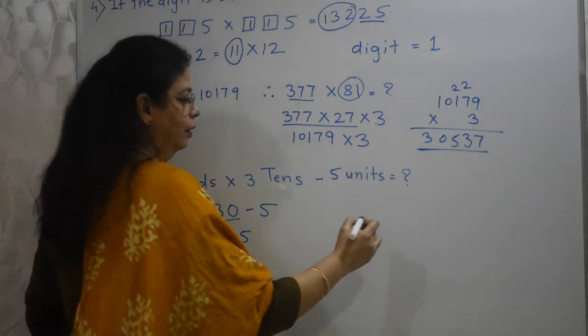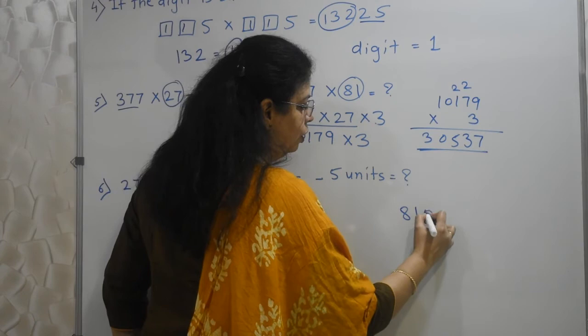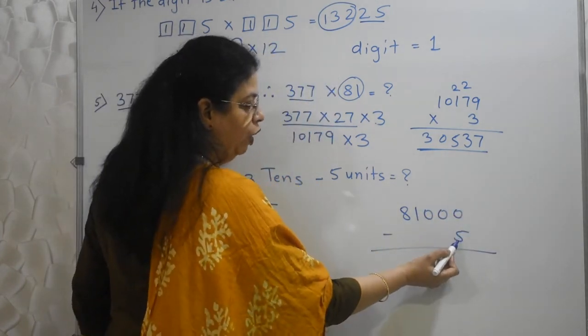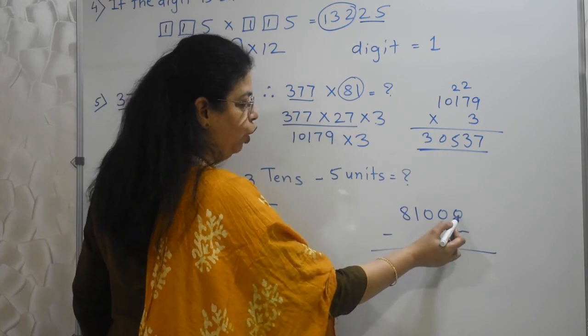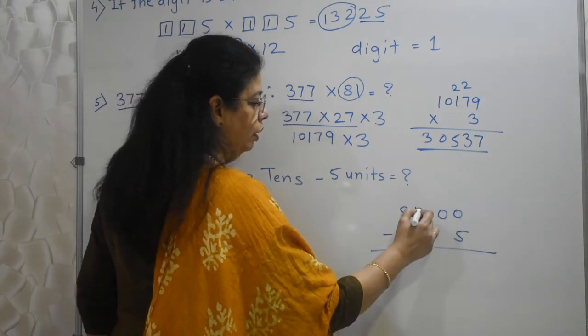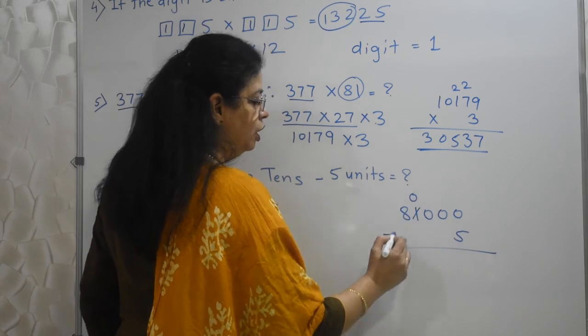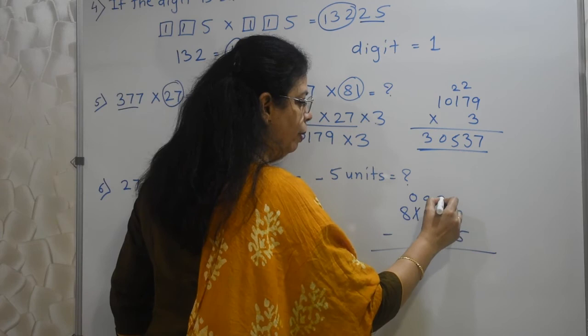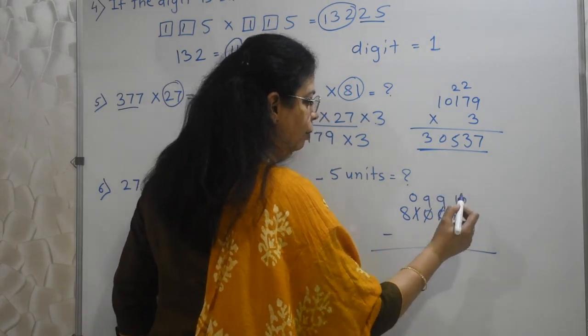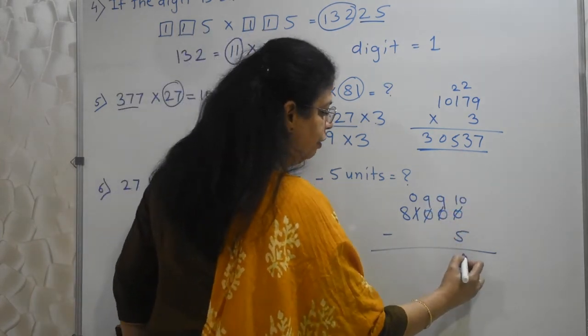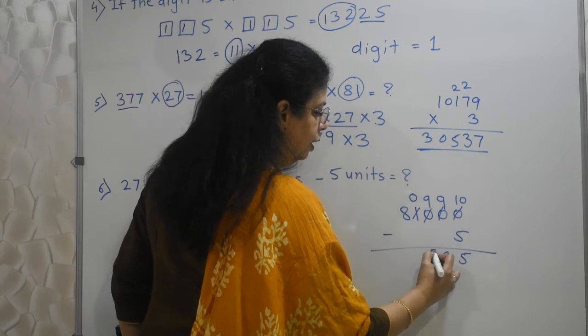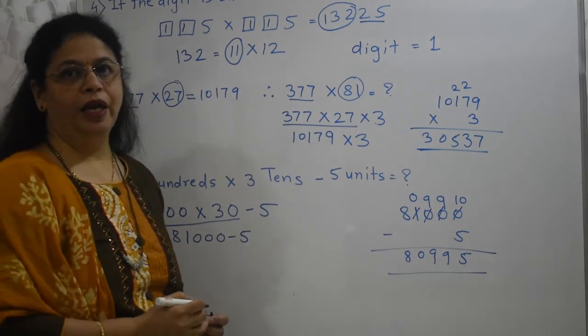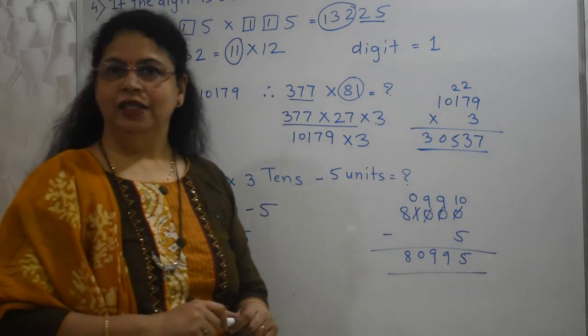How can you do that? See? 81,000 minus 5. 5 cannot be subtracted from this 0. So, they will take help of this 1. This 1 will become 0. All middle 0s will become 9. And last 1 will become 10. So, 10 minus 5, 5. This is 9908. So, answer is 80995. Isn't it easy, students?